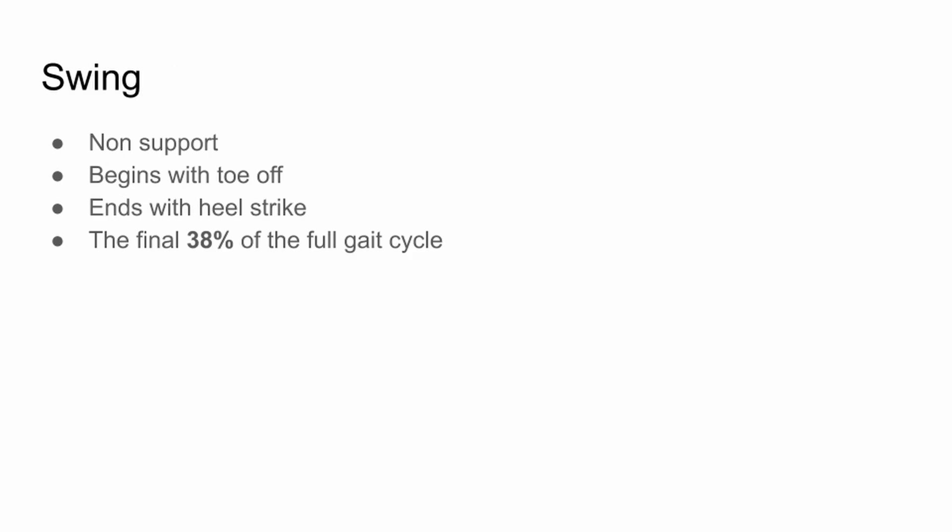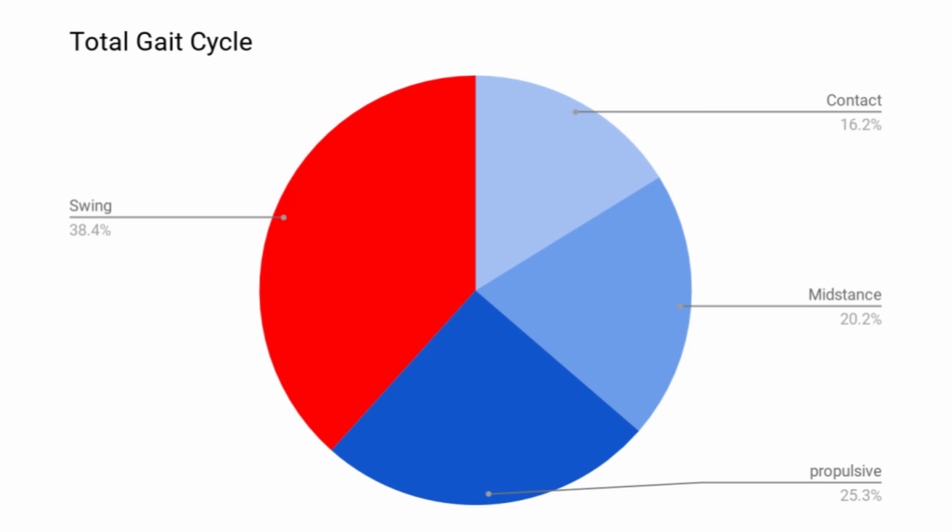Swing phase begins with the toe-off and ends with the heel strike. It's about the final 38% of the full gait cycle. This graph shows the total gait cycle. Remember that stance phase is broken down into contact, mid-stance, and propulsive.